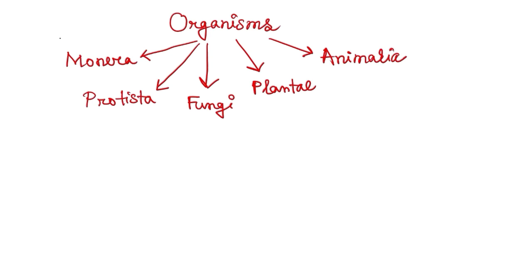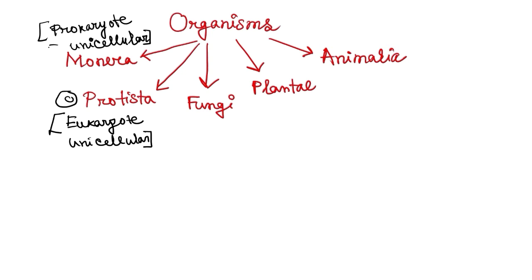Monera and Protista are both unicellular organisms. Monera is prokaryotic unicellular organisms and Protista is eukaryotic unicellular organisms. Other than Monera and Protista, other kingdoms—Fungi, Plantae and Animalia—all of them are multicellular.